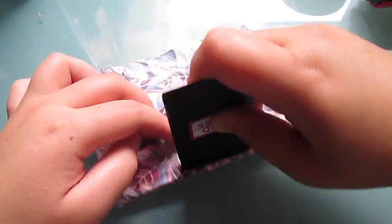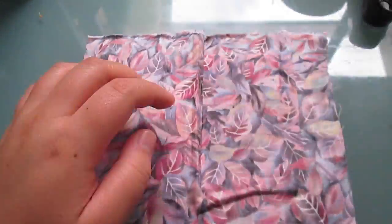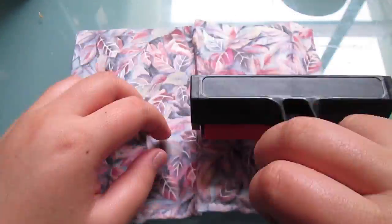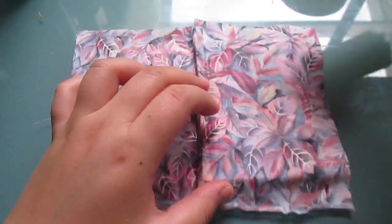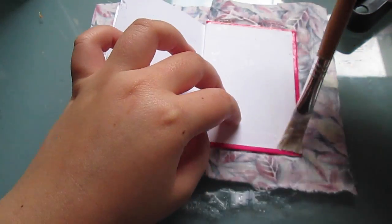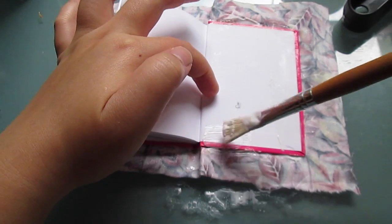Here I'm using my brayer tool and a pusher tool to help push the fabric over the covers and over the spine so that it covers the surface neatly and doesn't stretch the fabric.